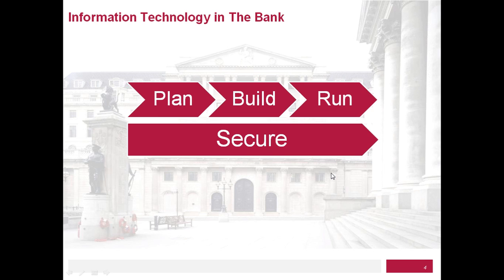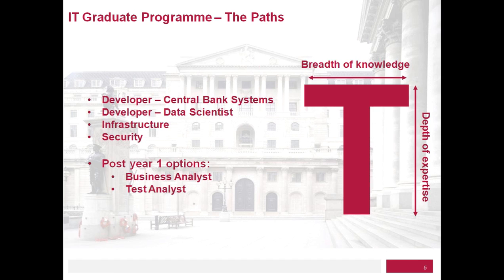Let's look a little bit more at the graduate program. We organize it into a set of paths. The first four are called the developer for central bank systems. We have a separate developer path for data scientists, an infrastructure path and a security path. We are also looking for graduates who may want to become business analysts and test analysts. After maybe year one on the program, those options open up as well. The team model on screen represents the breadth and depth of knowledge we are seeking to offer, giving people exposure to all the different parts of the IT life cycle.